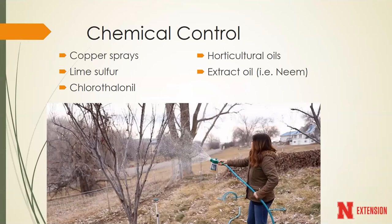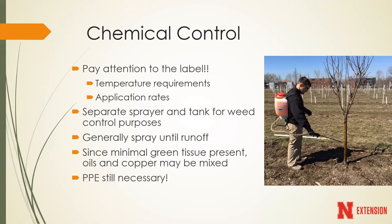Chemical control is another great option. For diseases, we tend to think of copper-based sprays, sulfur-based sprays, or chlorothalonil - an inorganic fungicide - which works very well for a lot of dormant season sprays. On the entomological side, our horticultural oils work very well, and extract oils such as neem oil can also work well for insect pest control. It doesn't matter if we're using chemical control in the middle of the growing season or in the middle of February - we must pay attention to the label.